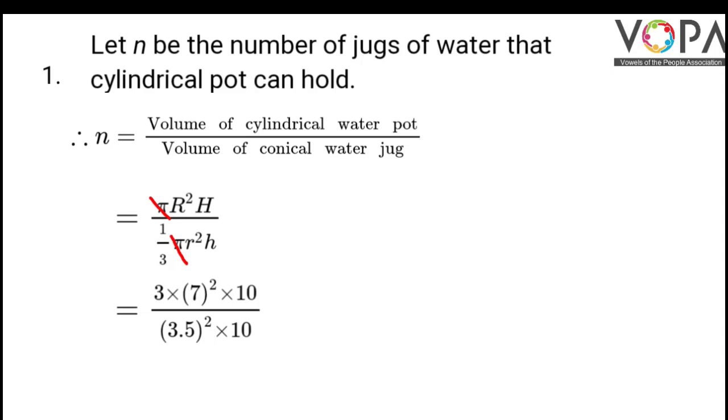Now we can cancel 10 from the numerator and 10 from the denominator. Also 7 is twice 3.5 so we can cancel it. So 3.5 once and that is 2s. So we will have the remaining numbers as 3 multiplied by 2², that is 2 × 2. So that will give you 12.